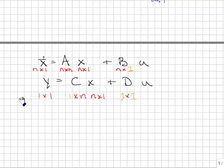And you can see I've written the sizes for all the rest of these. Now, in the orange, I've placed these 1s, that is if u is a scalar, so it's a single input system, and y is a scalar, it's a single output system.